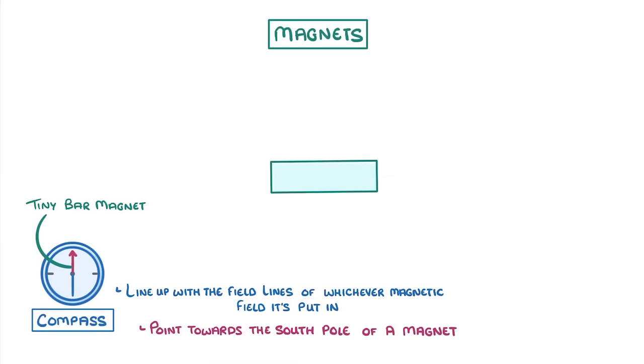So if we put our compass over here near our magnet, we could draw an arrow in the same direction as the compass needle. As it's heading towards this magnet, we know that this must be the south pole.